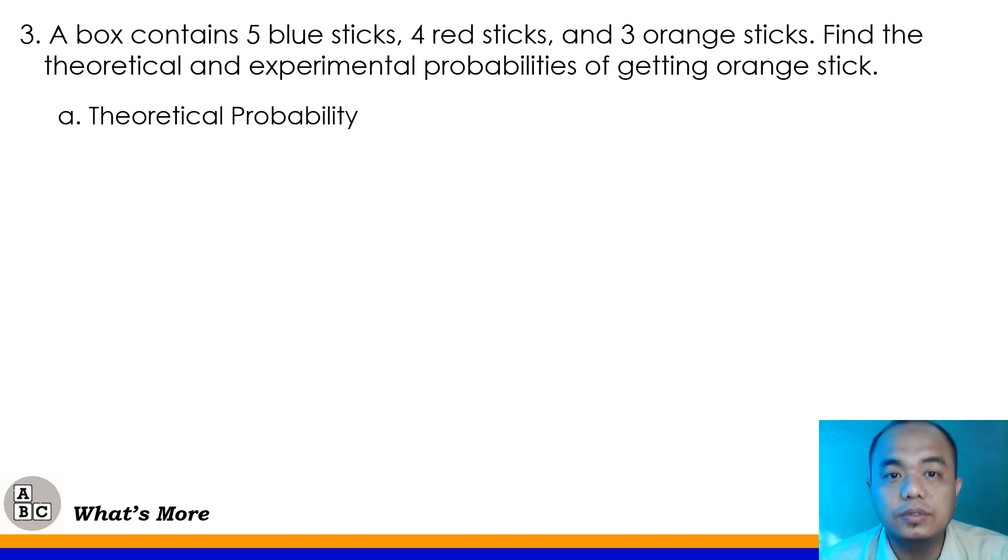Number 3. A box contains 5 blue sticks, 4 red sticks, and 3 orange sticks. Find the theoretical and experimental probabilities of getting orange sticks. Now, let's do first the theoretical probability class. So, what color are we looking for here? Yes, orange. 5 plus 4 plus 3, we have 12 total sticks. That would be our theoretical probability of getting an orange stick. Now, we will reduce that to lowest term by dividing it by 3. Very good. 3 divided by 3 will give you 1 and 12 divided by 3 will give you 4 or that is 25% in percent form. So, there's only a 25% chance that we will get the orange stick. Now, that's the first one, the theoretical probability.